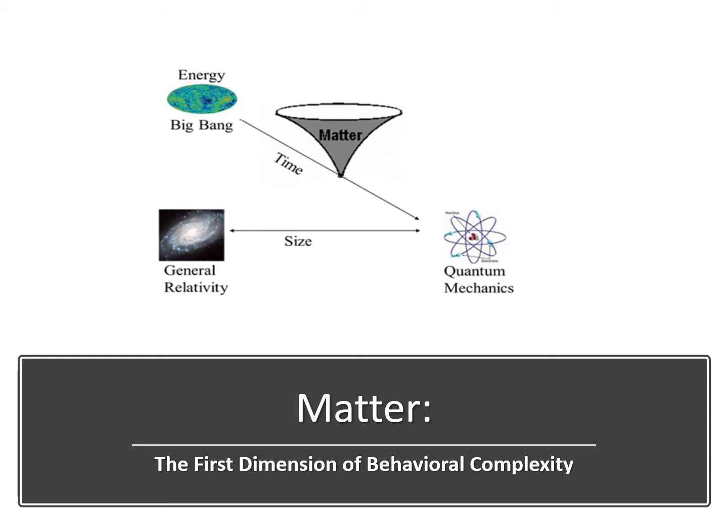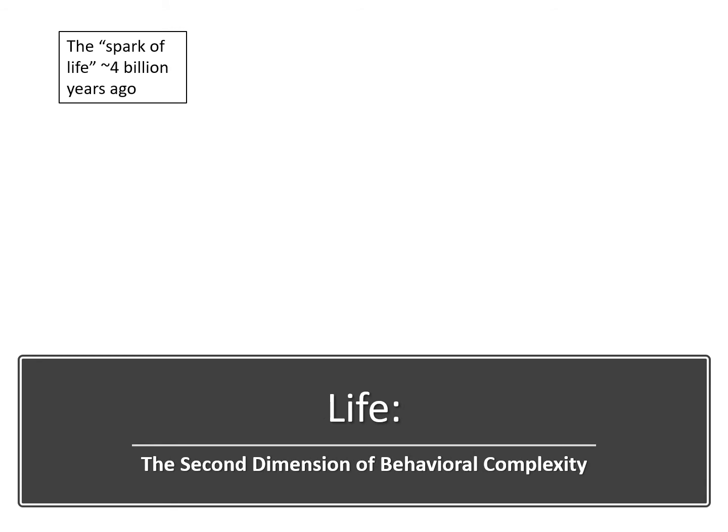Over a 10 billion year history, material objects have become increasingly complex. Particles emerged into atoms and emerged into complicated organic chemicals on planet Earth. Then there was a spark of life. This represents the fact that approximately 4 billion years ago, there was a jump from complicated chemical arrangements into a novel plane of existence called life.